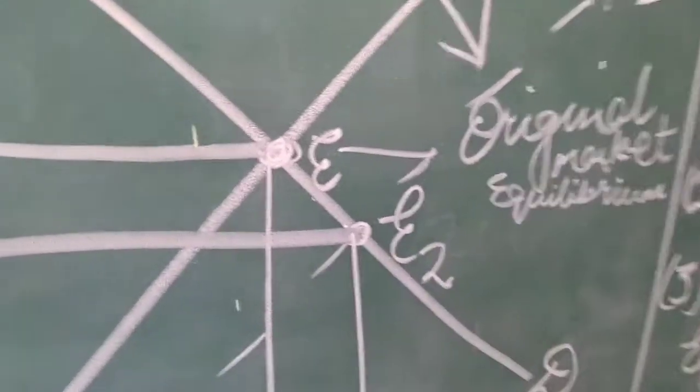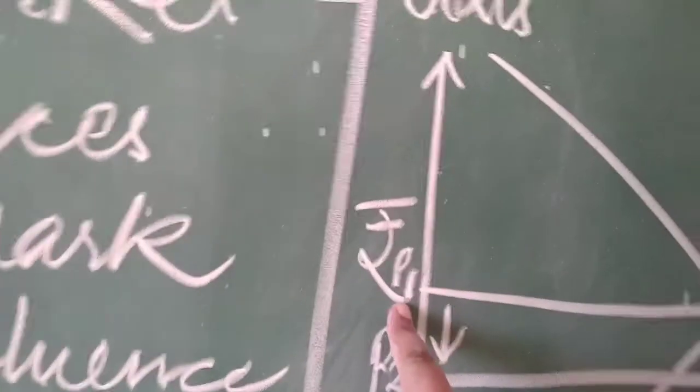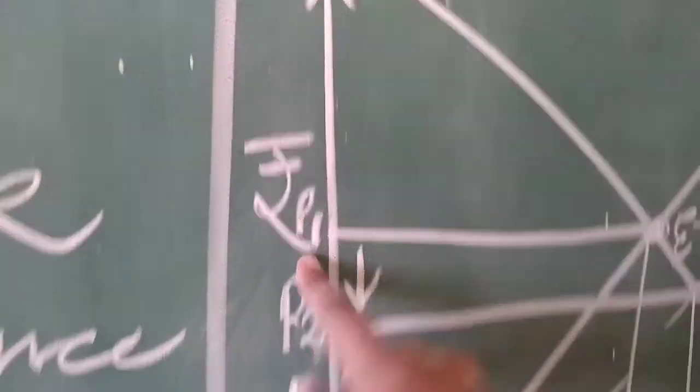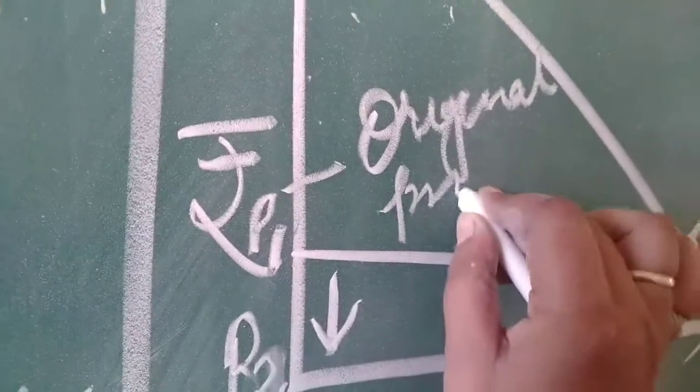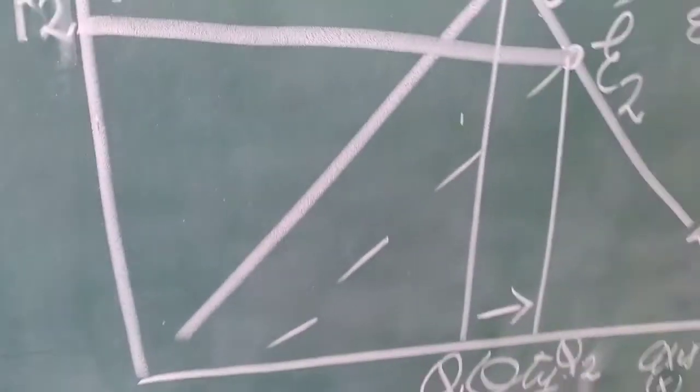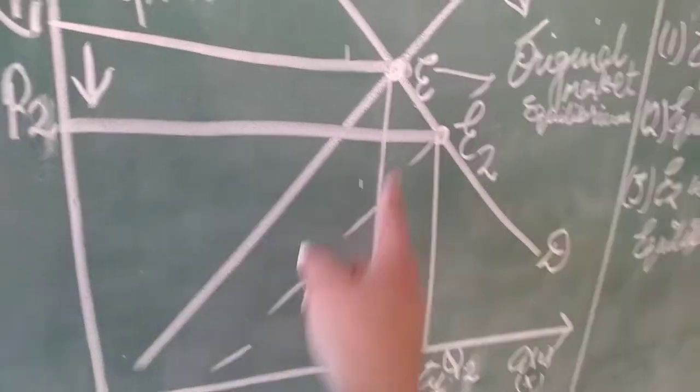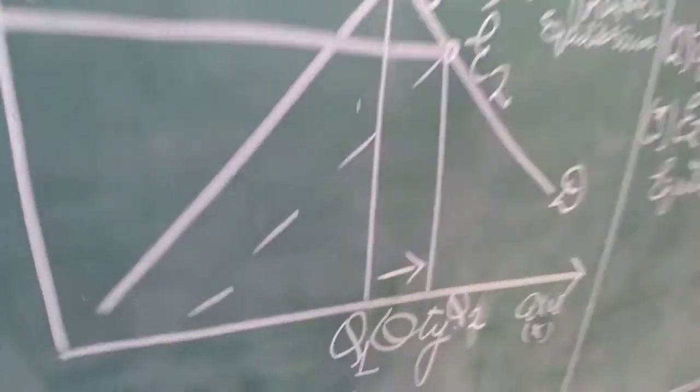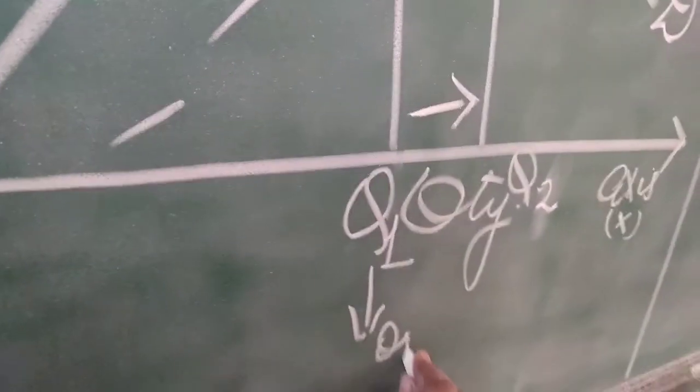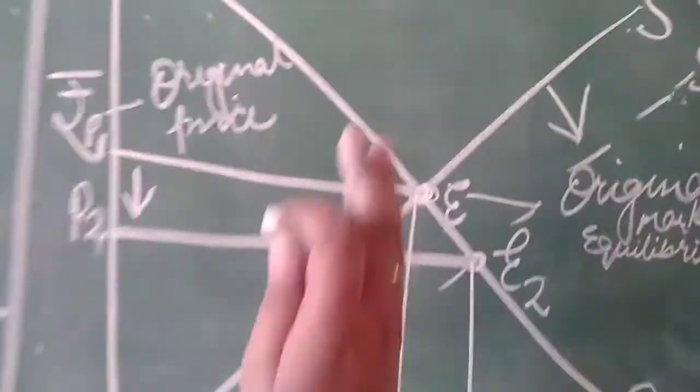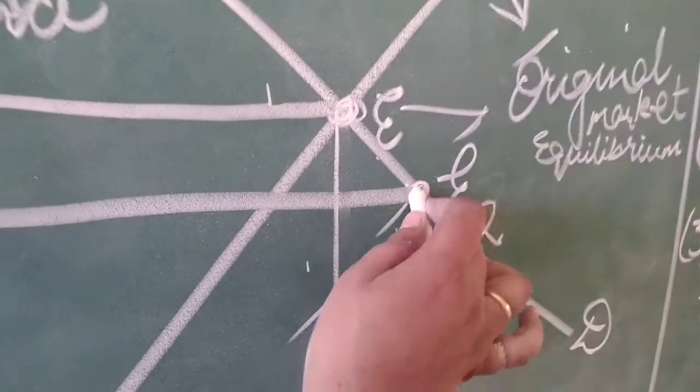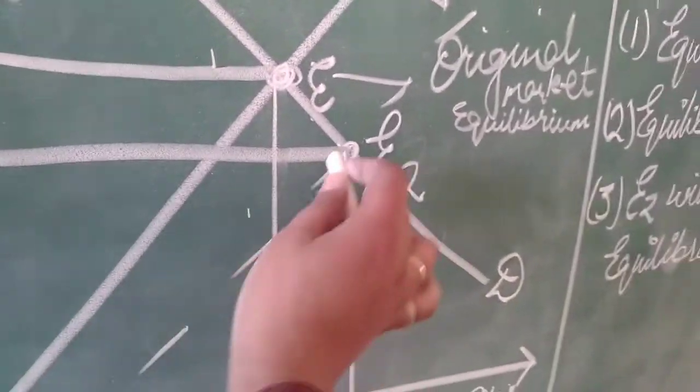This is original market equilibrium, and in front of it we have original price and this is original quantity. As you see, E ke neeche line ja rahi hai - that is original quantity. Now the supply increased, that moves forward. Now supply forward shift ho gayi hai. Now where this intersects with demand, there will be new equilibrium.